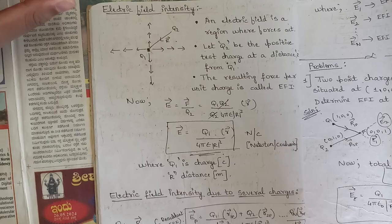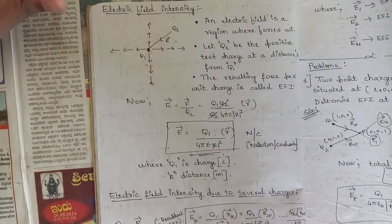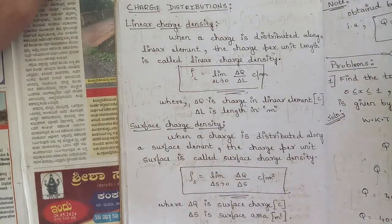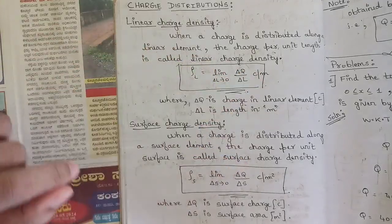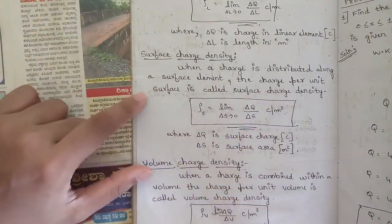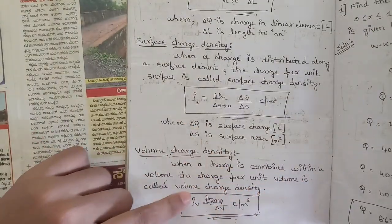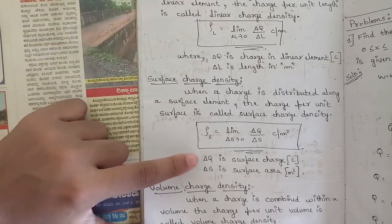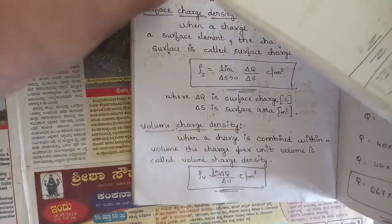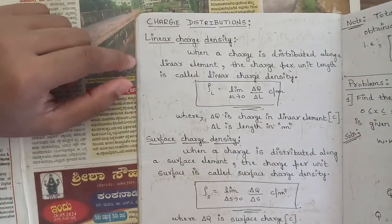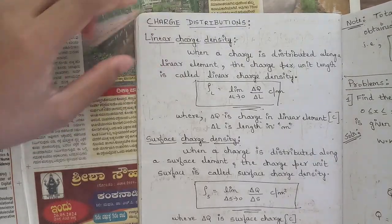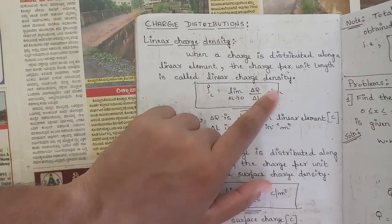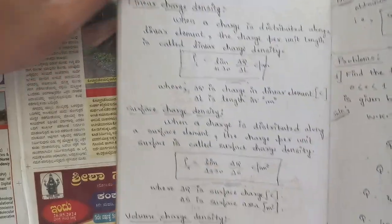One more important concept from Module 1 is the various kinds of charge distributions. There are three: linear charge density (charge per unit length, denoted rho_L), surface charge density (charge per unit surface, rho_S), and volume charge density (charge per unit volume, rho_V). This may be asked for four to five marks. Write all three kinds with definitions, mathematical representations, notations, and units.